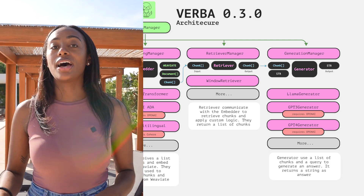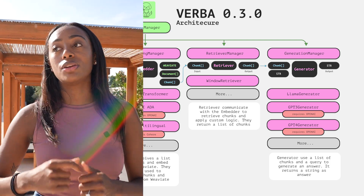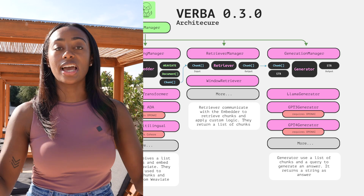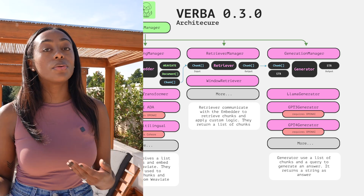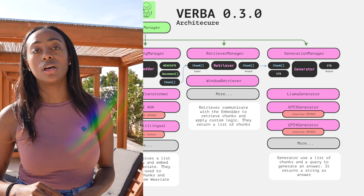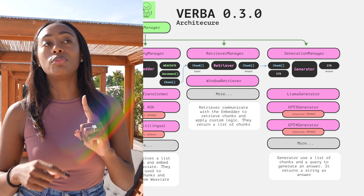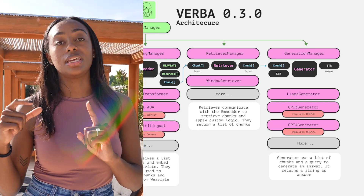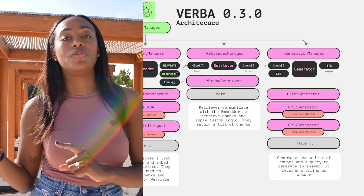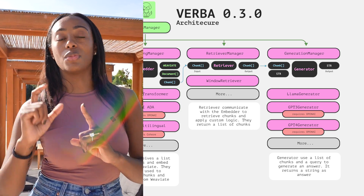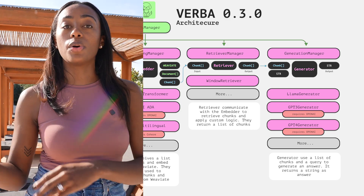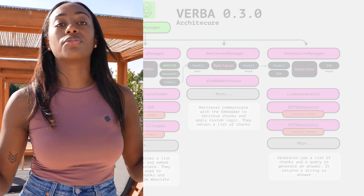Now that we have the retrieved information we can generate text from it. In Weaviate we have our generative module where in step one we are retrieving the blog posts or YouTube videos that are most relevant, and then we jump over to the text generation.